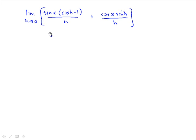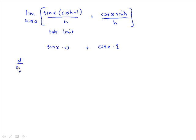When we take the limit and replace h with 0, we get sine x — there's no h variable. Now, cos h minus 1 over h is actually equal to 0 from known limits. And sine h over h equals 1. So cos x stays as is, and that tells us the derivative of sine x is equal to cos x.